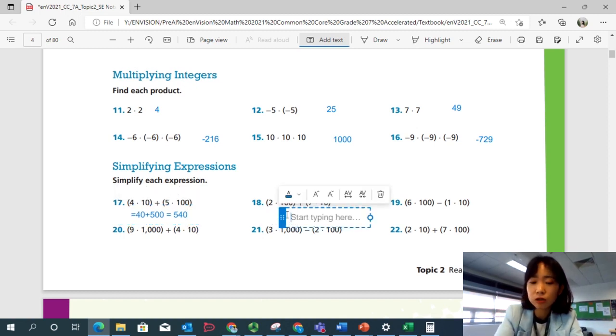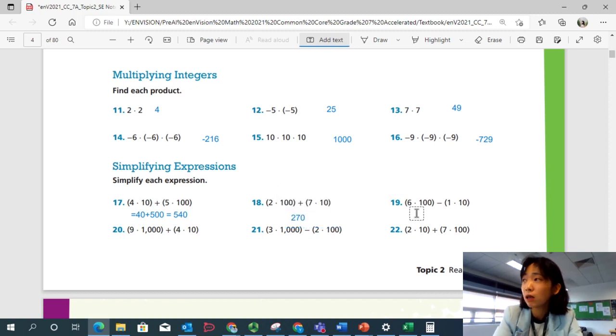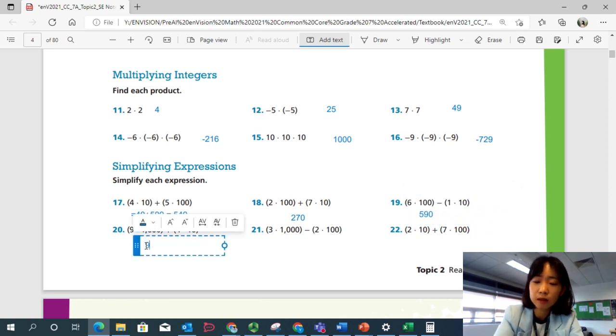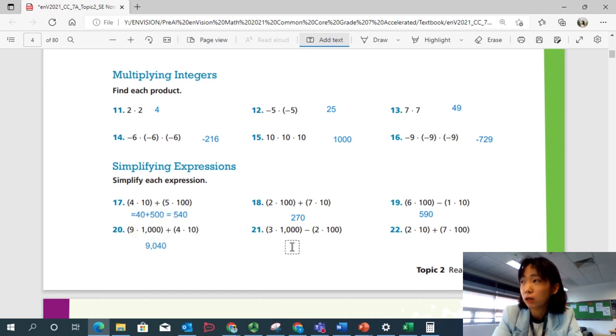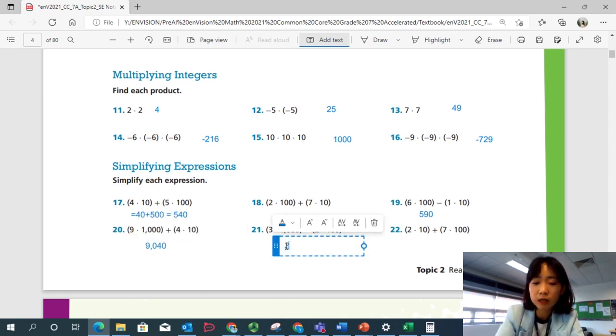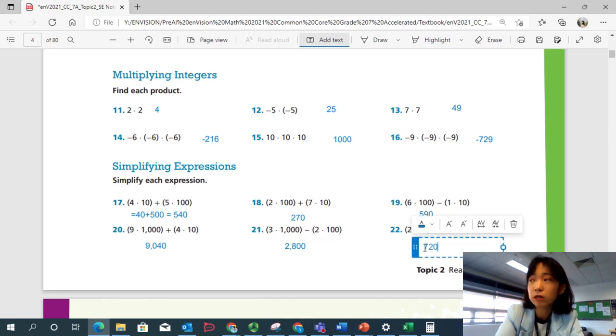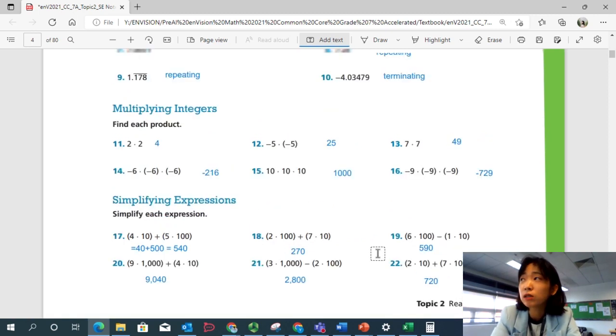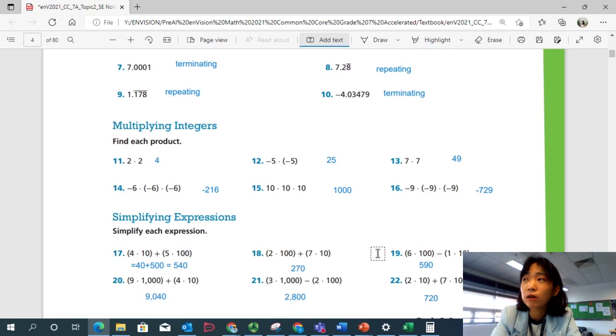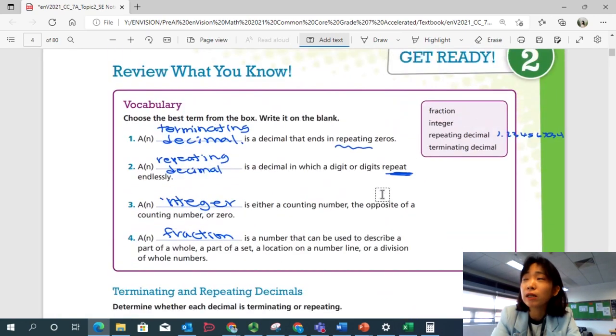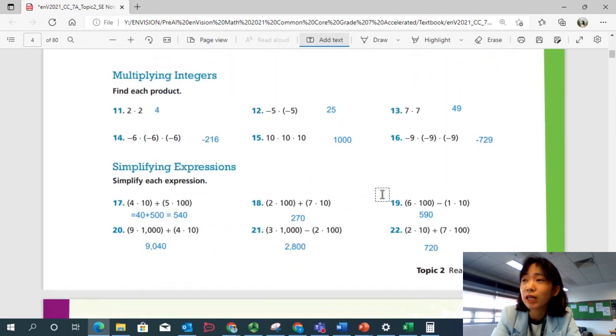Number 18. You should get 270. Number 19. You should get 590. Number 20. It's a big number. 9,040. Number 21. 2,800. Number 22. So check all your answers. See if you know how to do these by yourself. And you know the vocabularies before we move on to lesson one.